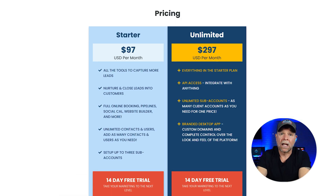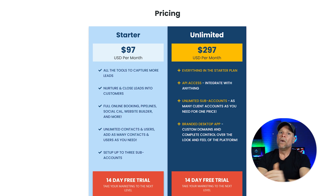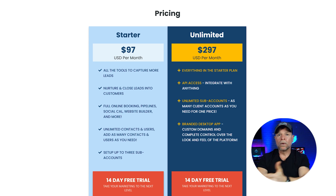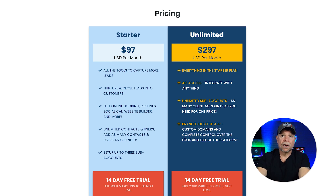On the other hand, Go High Level offers three pricing tiers. The starter plan is $97 a month, which includes all the tools you need to capture, nurture, and close deals. It also has pipelines, a social calendar, a website builder, and unlimited contacts and users, and you can already set up three subaccounts. If you want more, you can get the unlimited plan starting at $297 a month. It includes all features from the starter plan, plus API access, unlimited subaccounts, and a branded desktop app — everything from marketing automation to CRM and membership sites all under one roof. In terms of value for money, Go High Level offers a lot more bang for your buck.